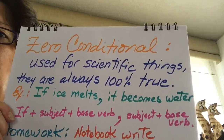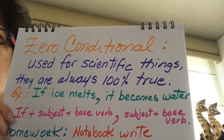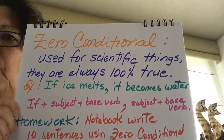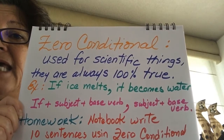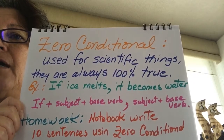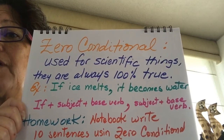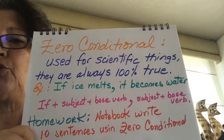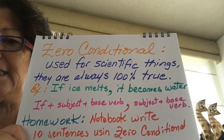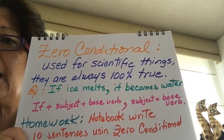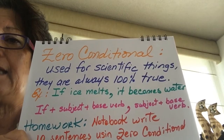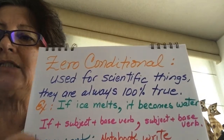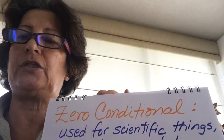I hope that once you watch this video one more time at home with a bit more time, you can copy this in your notebook because it's going to be useful. We are going to be placing tests and grading for the next partial, so part of your exams will cover what we are seeing right now. As homework, I would like you to write ten sentences in your notebook using the zero conditional — remember, zero conditional means scientific things, things that can be proved with no doubt.